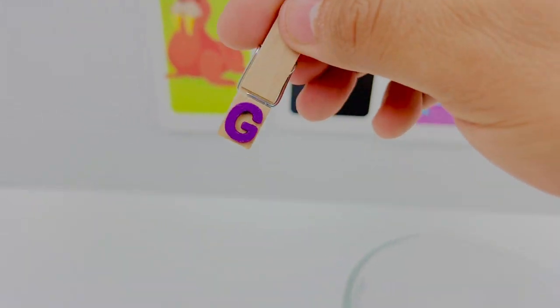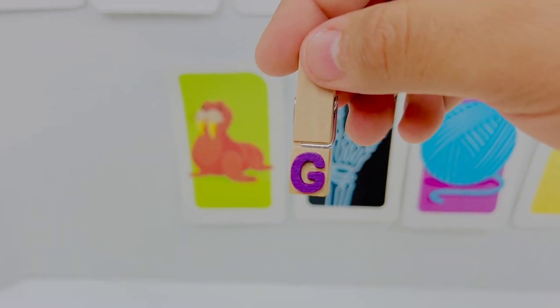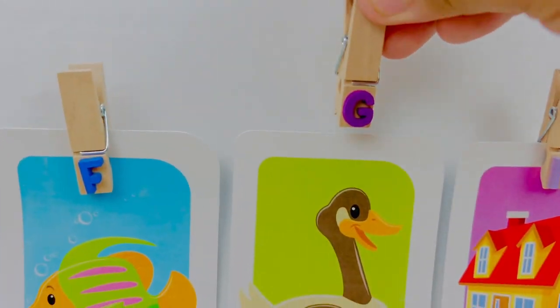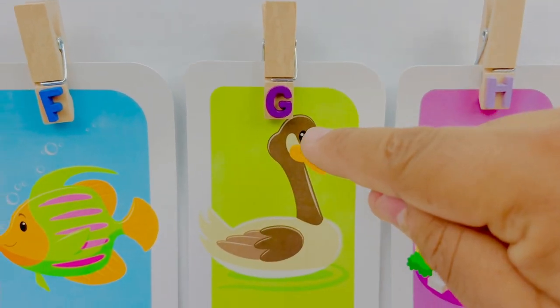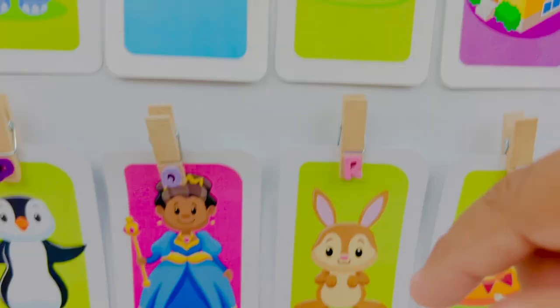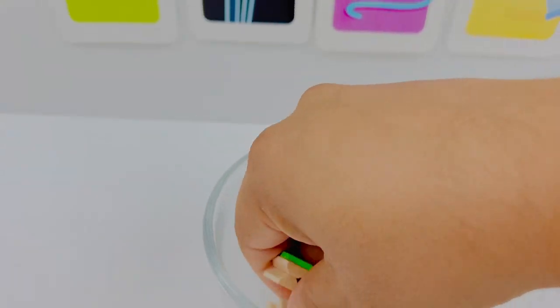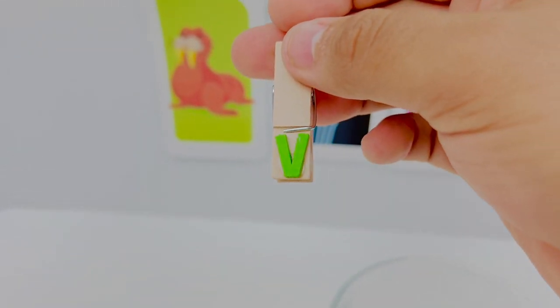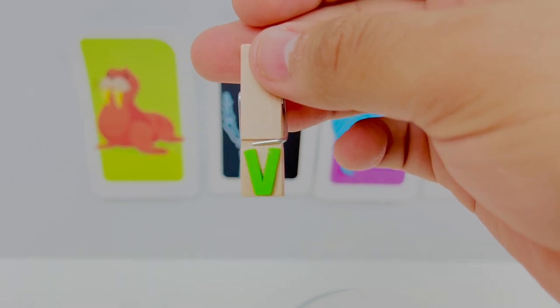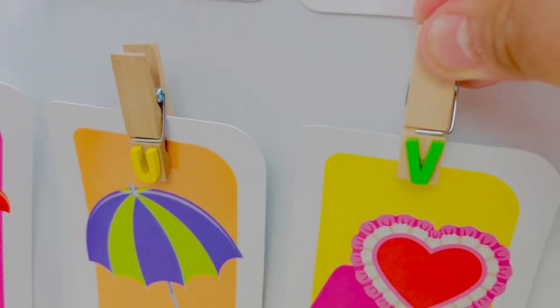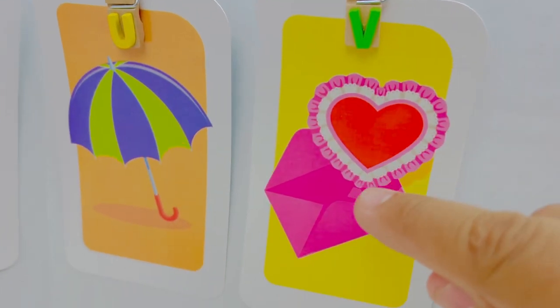This is letter G. Letter G is for goose. G goose. This is letter V. V is for valentine. V valentine.